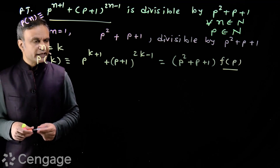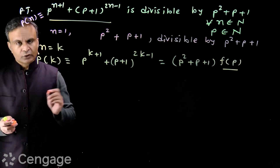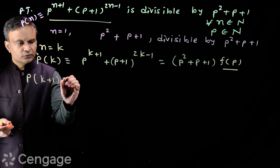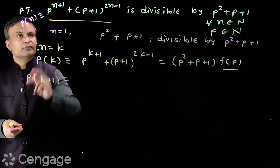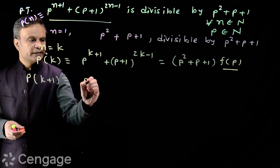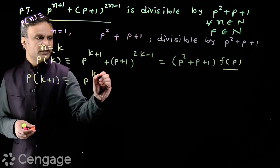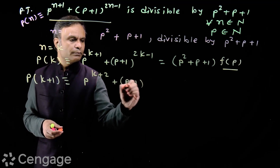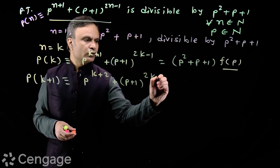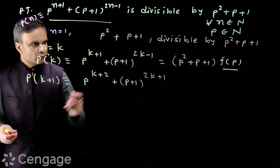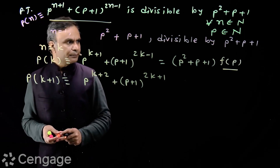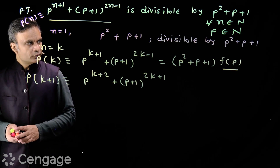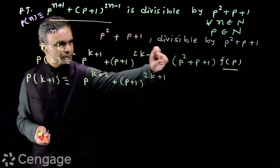We have assumed that the statement is true for n=k. Now we have to prove that the statement is true for n=k+1. If I put n=k+1, I get the expression as p^(k+2) + (p+1)^(2k+1). We have to prove that this is also divisible by p²+p+1. How can we use this assumption step?